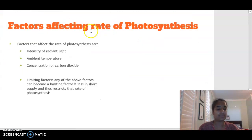Moving on now to factors that can affect the rate of photosynthesis. So rate means how fast photosynthesis can occur to produce that glucose. Radiant light is going to have an impact, ambient temperature is going to have an impact, and the concentration of carbon dioxide is also going to have an impact. So any of these factors can become a limiting factor, and if they are in short supply, or if there's not enough, then that's going to restrict the rate of photosynthesis and slow down that production of glucose.